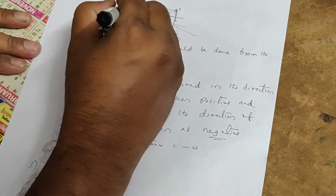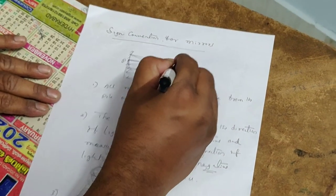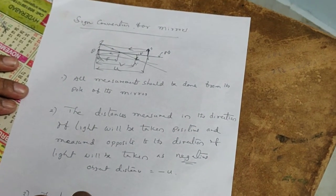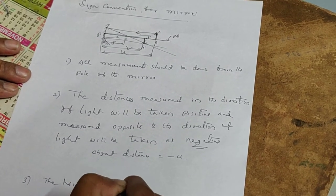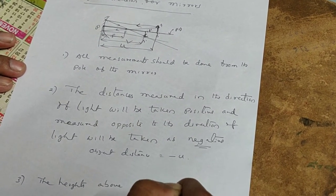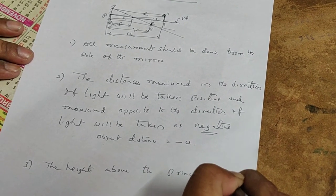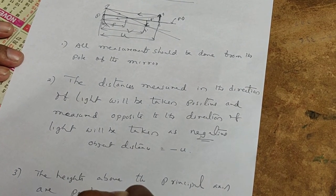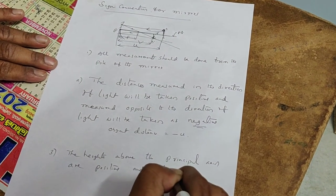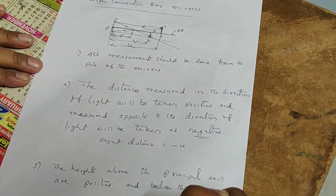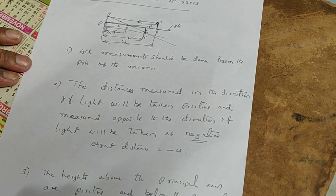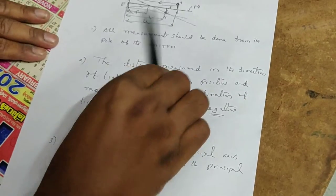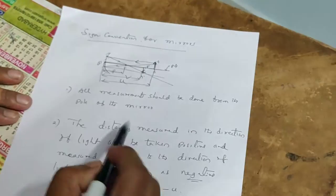Similarly, the heights above the principal axis are positive, and the heights below the principal axis are negative. So the height above this principal axis will be positive, and the height below this principal axis will be taken as negative.